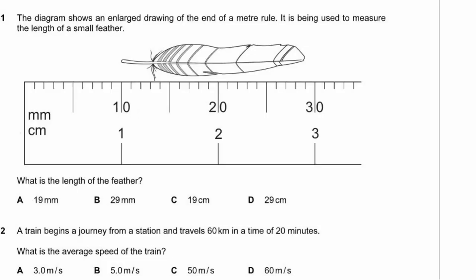Question 1. The diagram shows an enlarged drawing of the end of a metre rule being used to measure the length of a small feather. One end is at 10mm and the other end is at 29mm, so the total length is 29mm minus 10mm, which is 19mm. Option A.